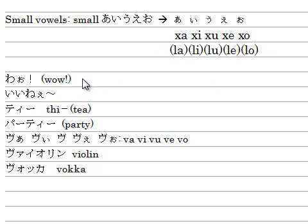じゃあ練習しましょう。These small letters for A-I-U-E-O — there's no vocabulary that uses this small vowel as a standalone vocabulary word. But recently it's used a lot, especially in animation, comics, and for showing or expressing emotion. This small vowel doesn't appear in formal documents. Anyway, let's type WOW! So WA is W-A, then small O is X-O, giving us WOW, then add an exclamation mark.